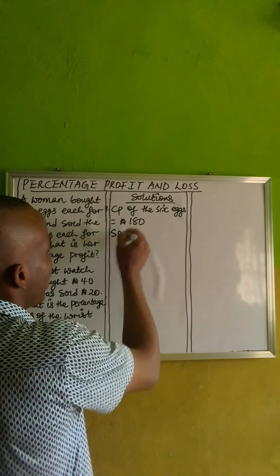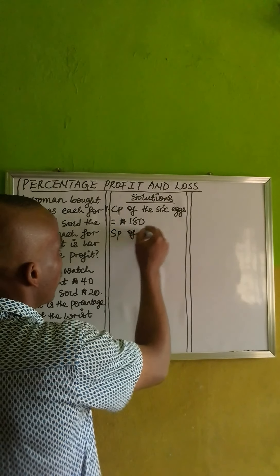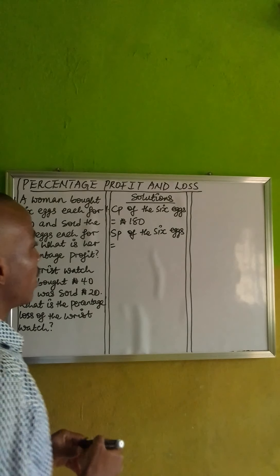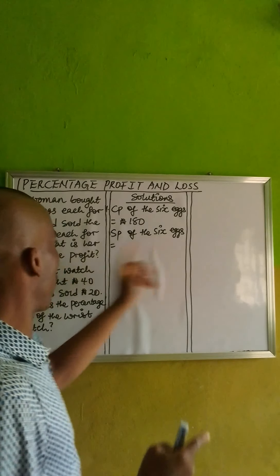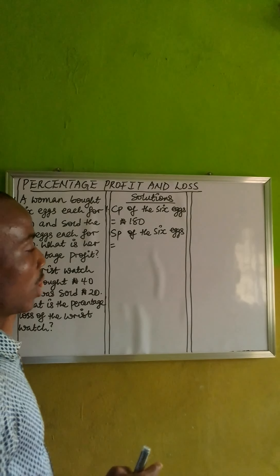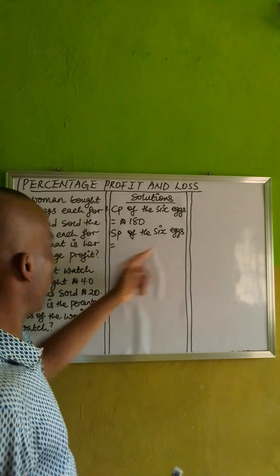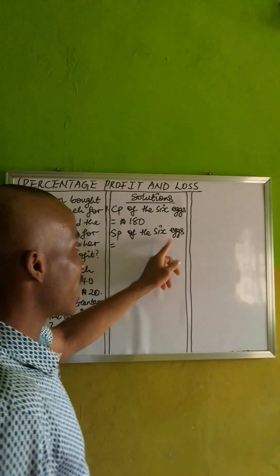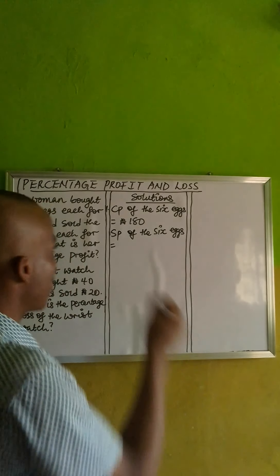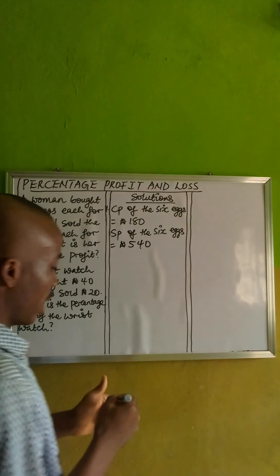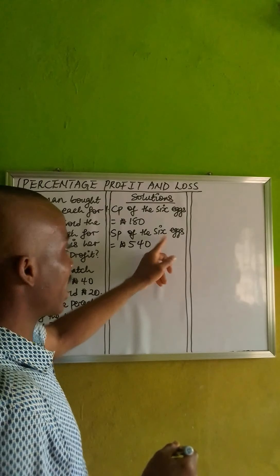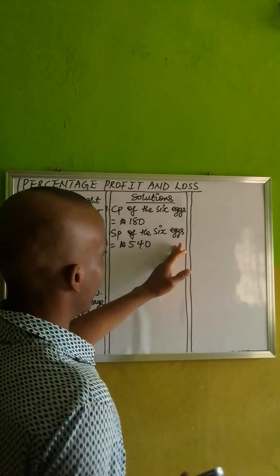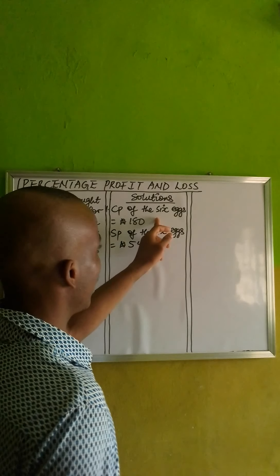Now, what about the selling price — SP? I can abbreviate that. Selling price of the 6 eggs — what will it be? Now, 1 egg: she sold 1 egg for 90 Naira from the question. If she sold 1 egg for 90 Naira, then as there are 6, that would be 90 times 6. The selling price of the 6 eggs will then be 540 Naira, because 90 times 6: 9 times 6 is 54, we add 1 zero, that's 540 Naira. So the selling price of the 6 eggs is 540 Naira and the cost price is 180 Naira.